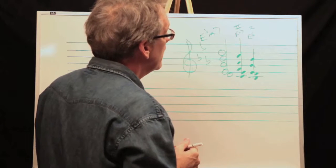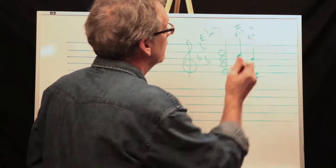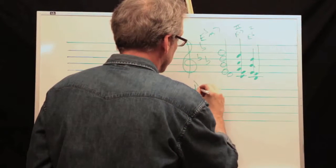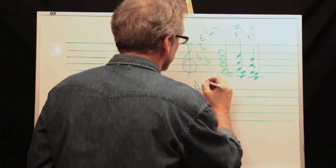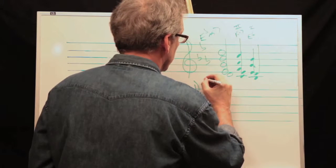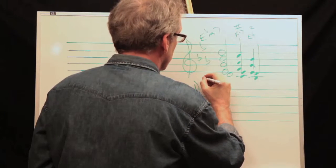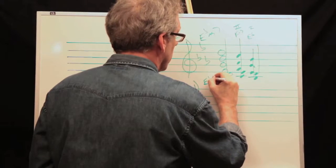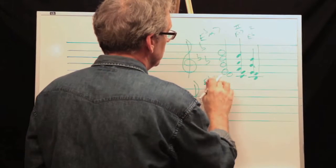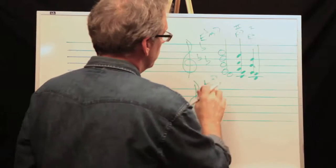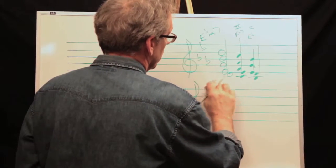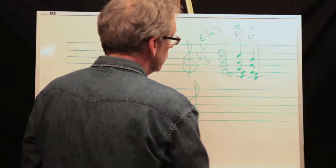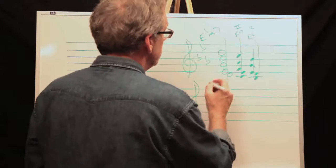We also talked about doing a diminished down here. Let me see. So here is our, let's stay in the key of E-flat. Here's E-flat, let's start with a two chord in the key of C. So what's the two chord in the key of C is D-minor.